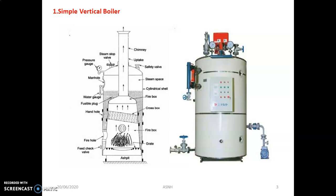The grate is the space where fuel is burnt. Generally, coal is considered as the fuel and is kept on the grate for burning. On the bottom side, there is the ash pit area where, after combustion, whatever ash is produced gets collected at the bottom section of the boiler.